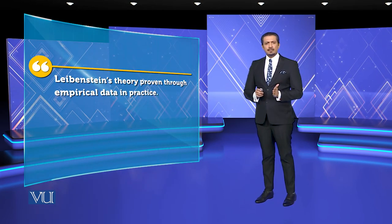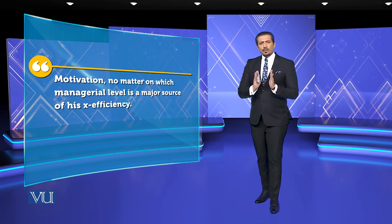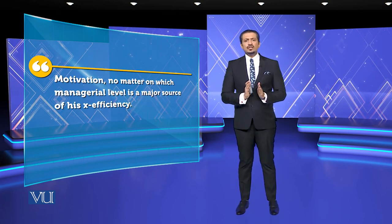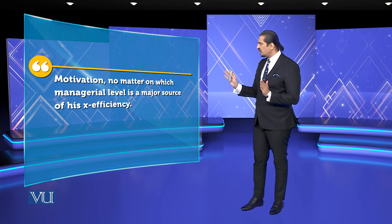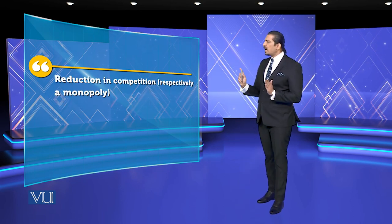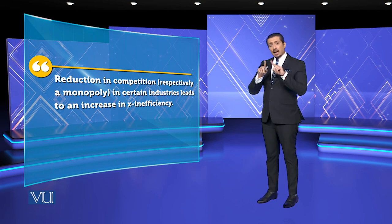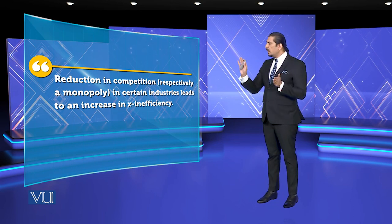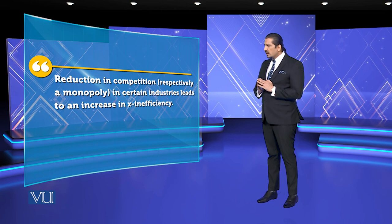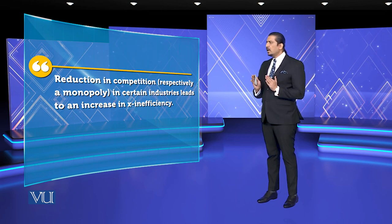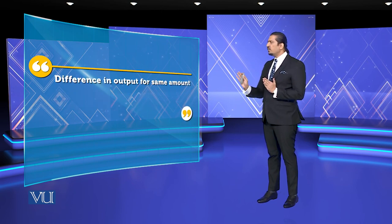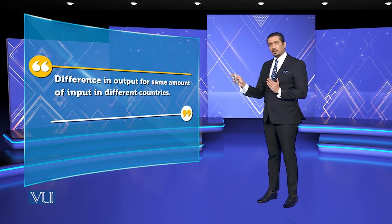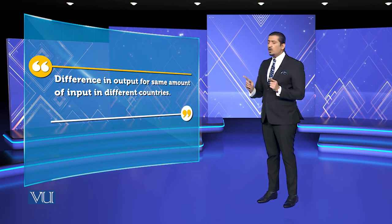Let us understand: Leibenstein's theory is proven by empirical data in practice, where motivation — no matter at which managerial level — is the major source of X-efficiency. Then, a reduction in competition, respectively a monopoly, and how you produce in certain industries leads to an increase in X-efficiency. And then there is the difference in output for the same amount of input — very important.